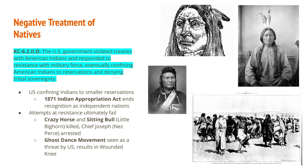The negative treatment of Native Americans is seen throughout the 19th century. The U.S. government violated treaties with American Indians and responded to resistance with military force, eventually confining them to reservations and denying tribal sovereignty. The U.S. confined Indians to smaller and smaller reservations, and in 1871 the Indian Appropriation Act ended recognition of tribes as independent nations — there would be no more treaties, and the government would simply legislate what it wanted to do with Native Americans.